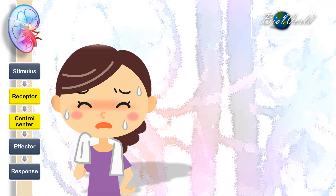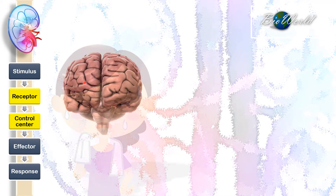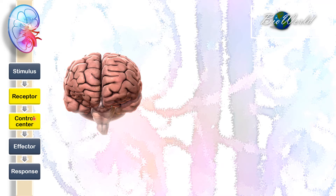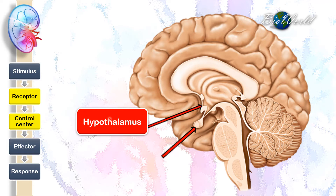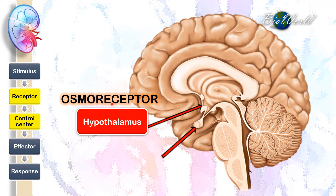The increase in blood osmotic pressure will be detected by the receptor located in the brain. The brain is also the site for the control centre; however, the receptor and the control centre are in two different locations. The receptor is the hypothalamus, which contains an osmoreceptor that can detect changes in blood osmotic pressure.